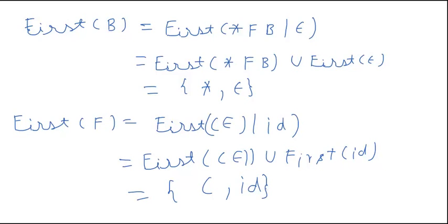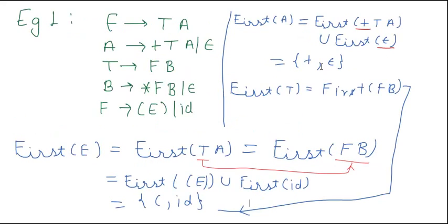So this was the First Set. In the next tutorial we will learn about First and Follow sets. Here I would like to tell you that T, A, B, and F are non-terminals, while plus, epsilon, asterisk, bracket open, bracket close, and id are the terminals.